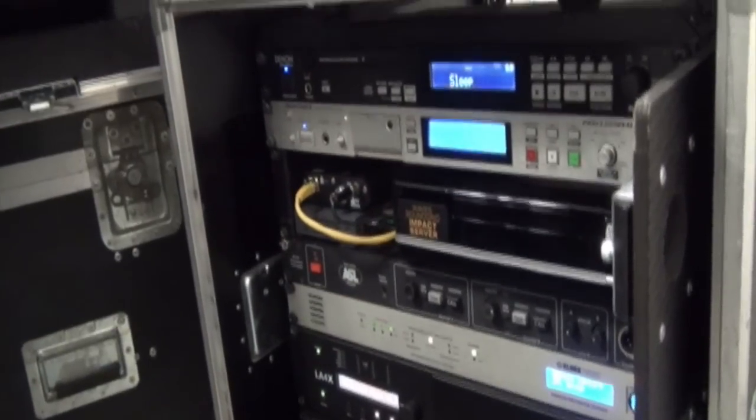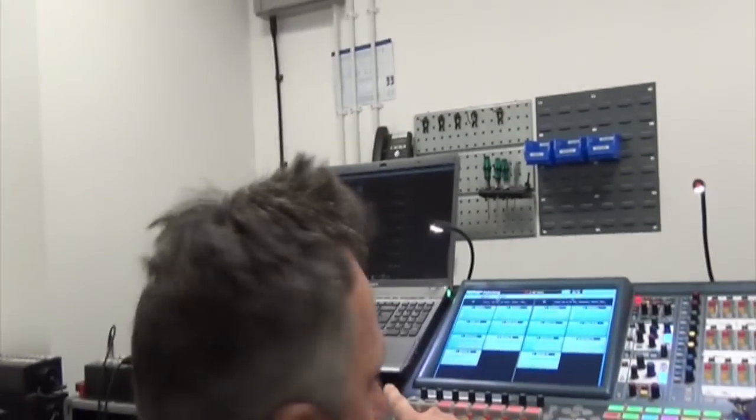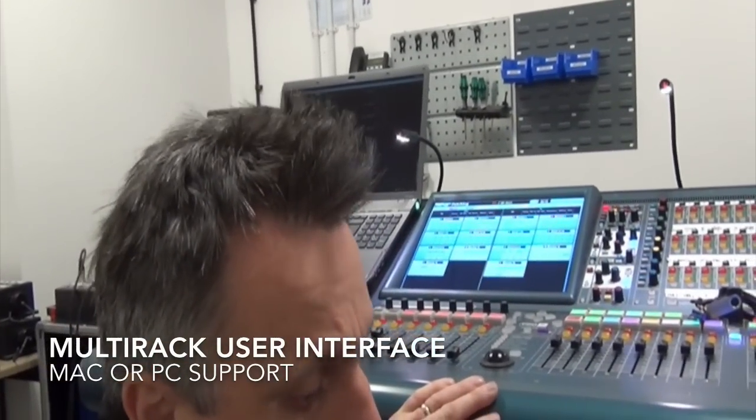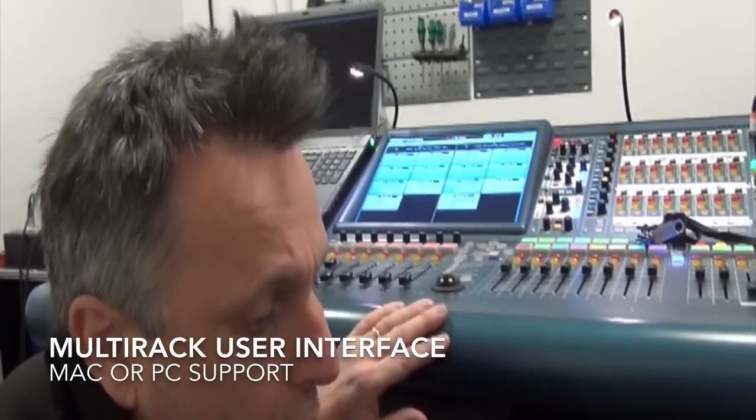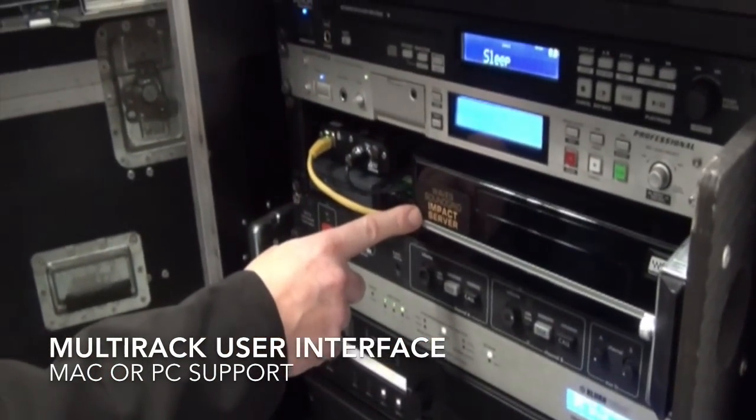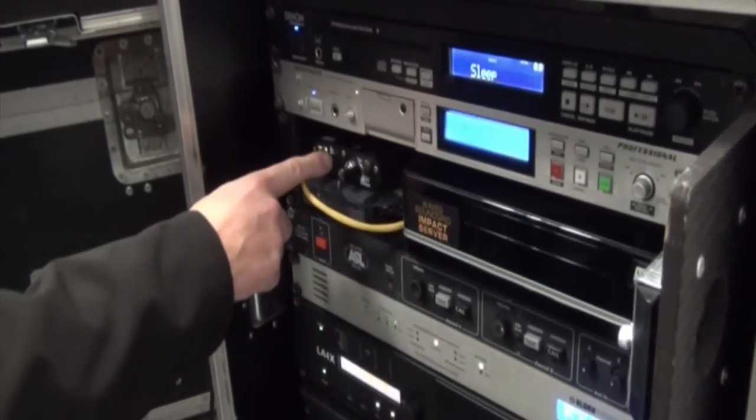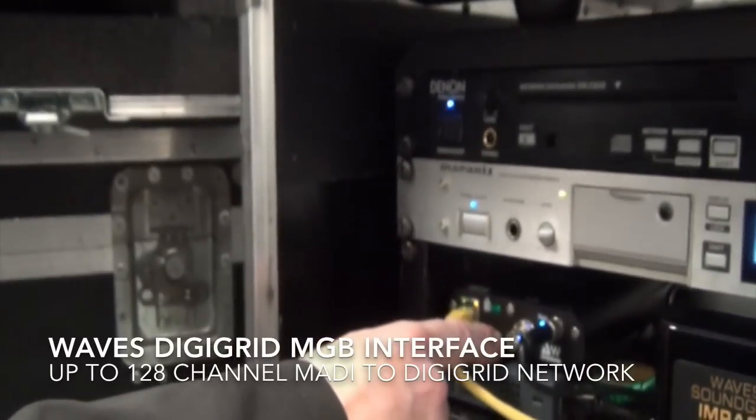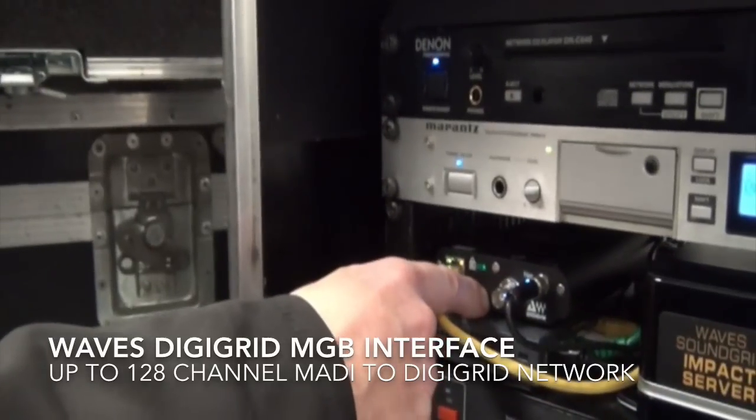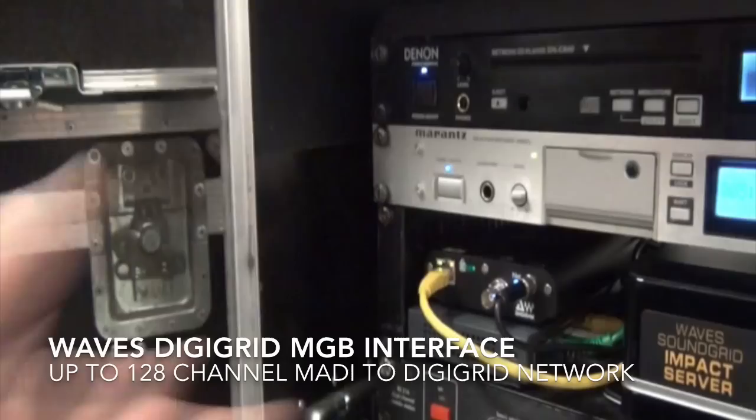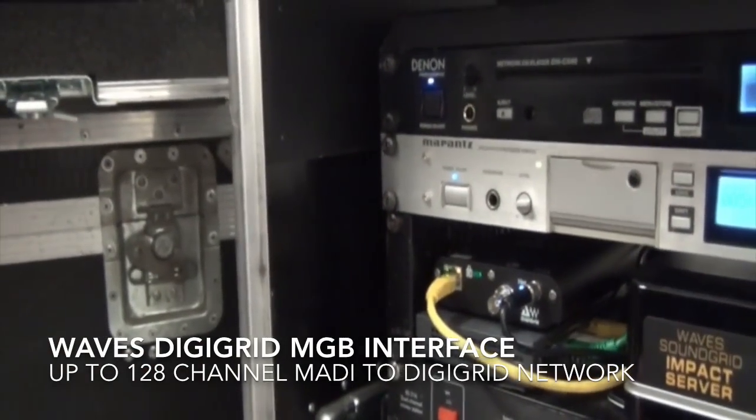The computer that you see up on my desk, the Sony PC, it could be anything because it's only running the actual user interface to control the plugins. The actual hardware DSP is happening on Waves own specific impact server. And you also can see here, it's a little bit difficult to see because I've racked it up. This is a Waves DigiGrid MGB. The MGB is basically an interface that takes MADI and turns it into a Cat5 environment that's allowing me to network all of these machines together.